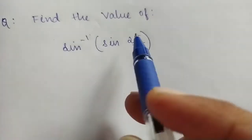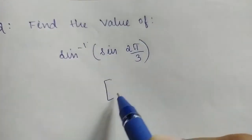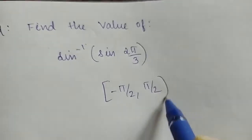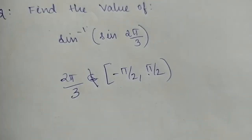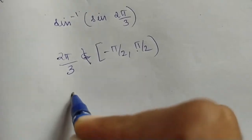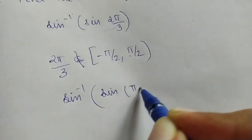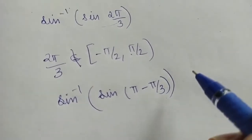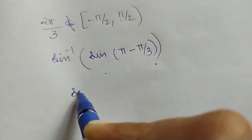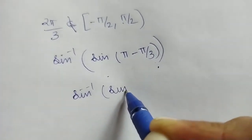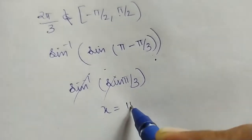Example: find the value of sin inverse(sin 2π/3). The principal value range is the closed interval [−π/2, π/2]. Since 2π/3 does not belong to this range, we use the formula sin(π − θ) = sin θ. So sin(2π/3) = sin(π − π/3) = sin(π/3). Therefore sin inverse(sin π/3) = π/3. The required answer is π/3.